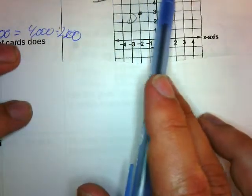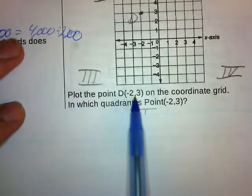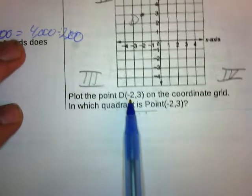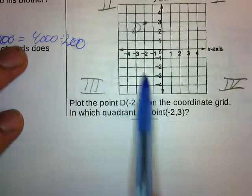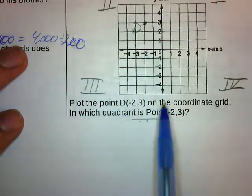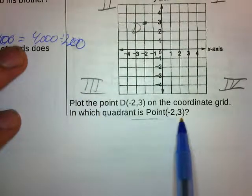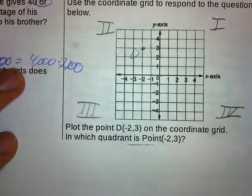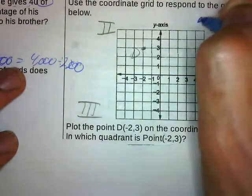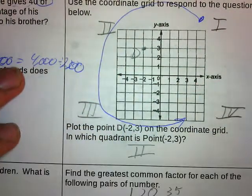Use the coordinate grid to respond to the question below. The point D, which is negative 2, positive 3, is on the coordinate grid. Which quadrant is point negative 2, positive 3 in? If you remember, our quadrants are shaped like a C — we start here and go in a circle and end over here, just like a C. It would have to be in quadrant 2.